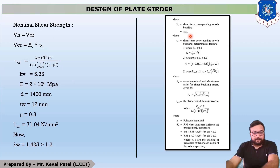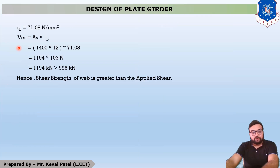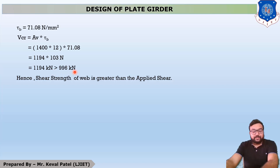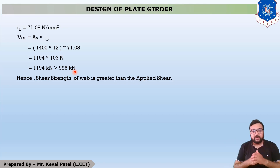With τv ready, we can compute VCR = Av × τv. After calculating all the data, VCR = 1194 kN, which is greater than 996 kN. This means our selected section is also safe in web buckling.